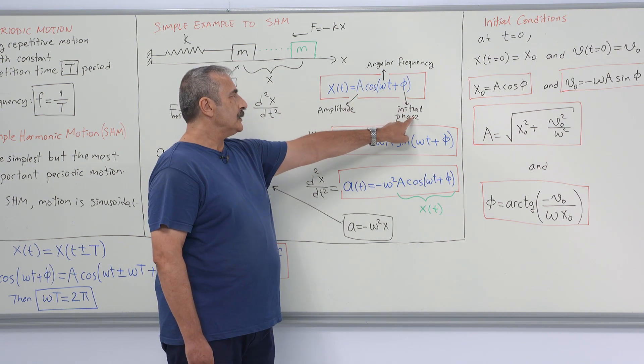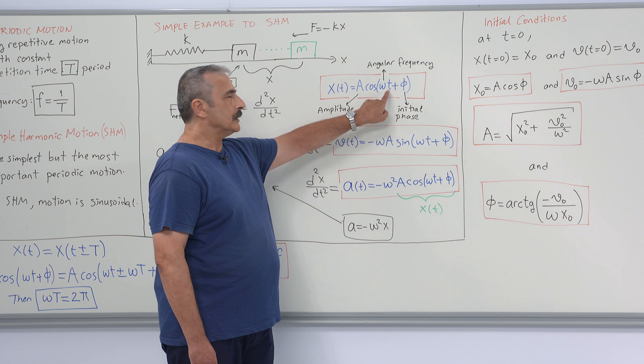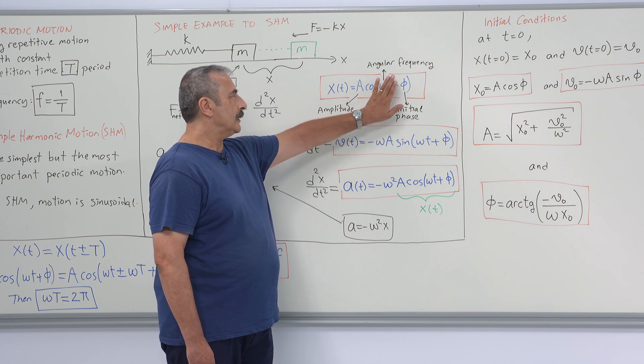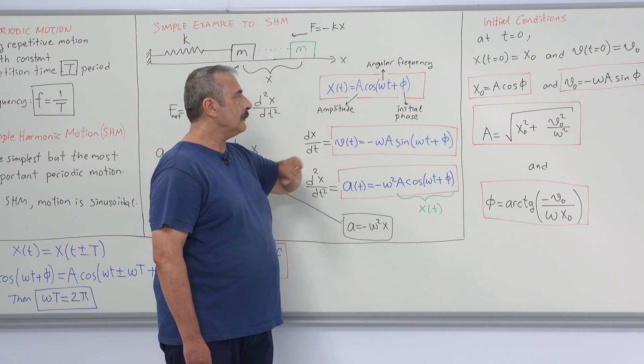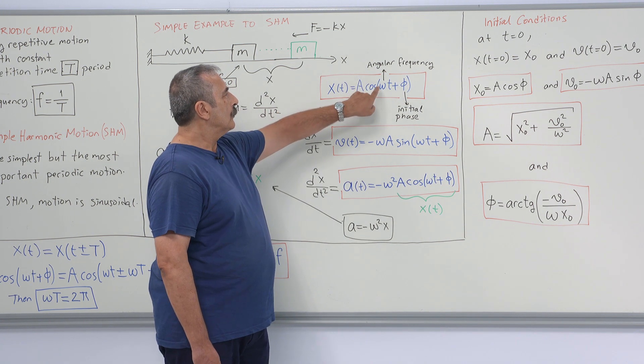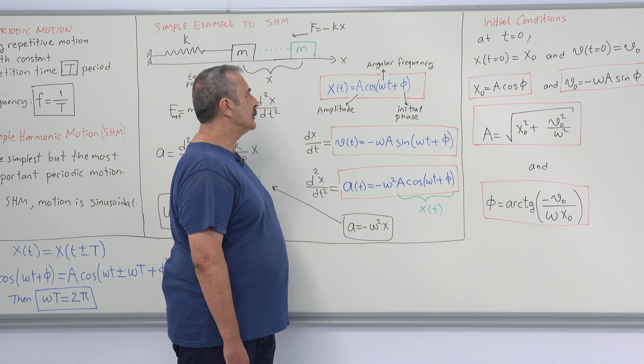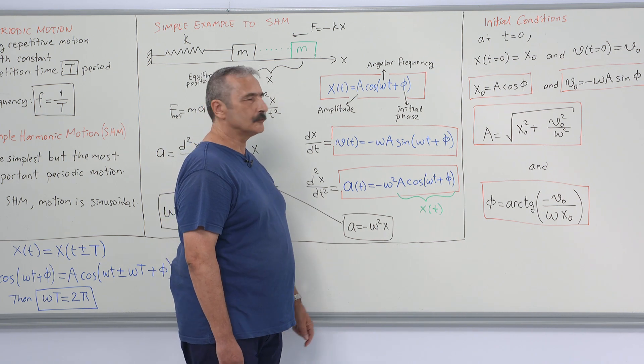Phi is the initial phase because when t equals 0, only phi remains within the cosine argument. And omega is the angular frequency for the reason will become clear soon.